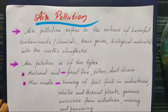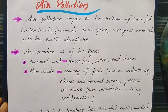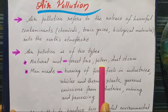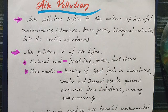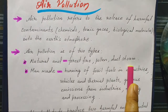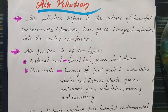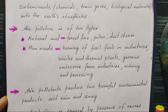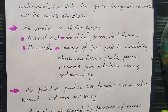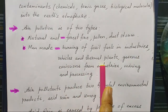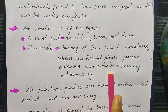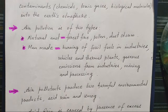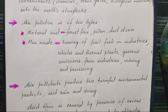Natural air pollution is caused due to forest fires, pollens present in flowers, and dust storms — big storms that bring complete dust, also causing air pollution. Manmade air pollution is caused by burning of fossil fuels in industries, vehicles, and thermal plants, and from gaseous emissions from industries, mining, and mining processing.